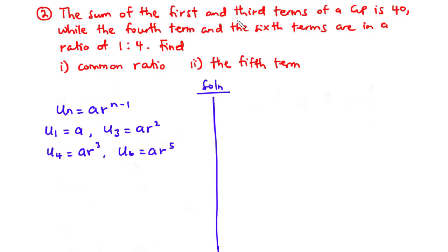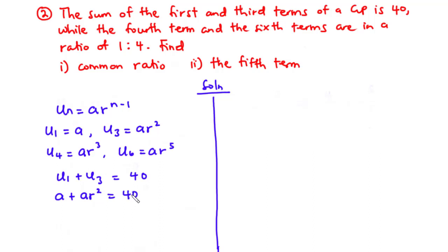The sum of the first and third terms is 40, so u_1 + u_3 = 40. That gives us a + a·r^2 = 40. Factoring out a: a(1 + r^2) = 40. Let's call this equation 1.